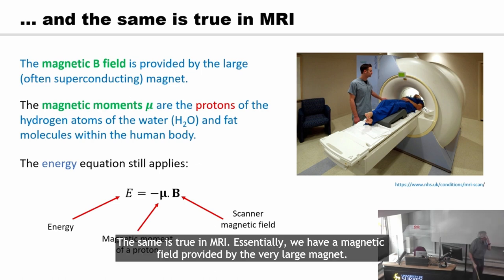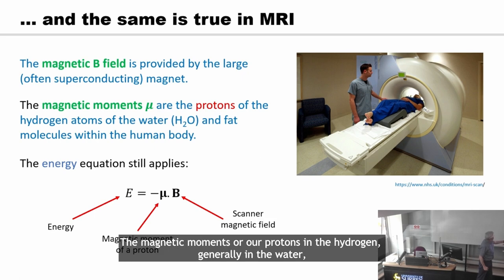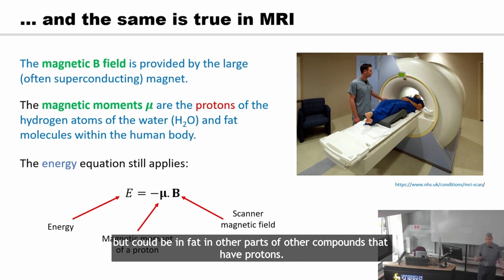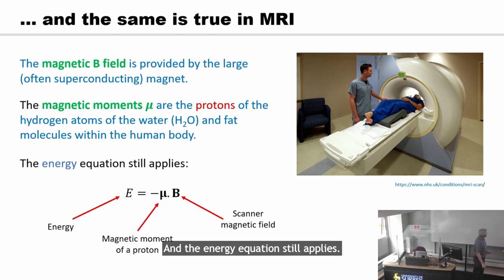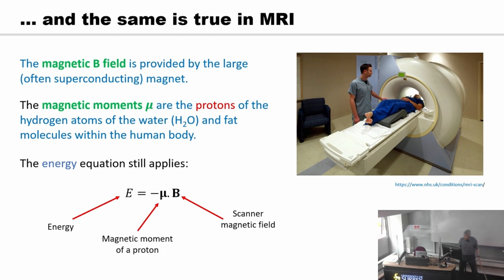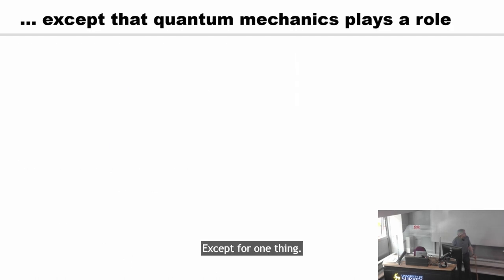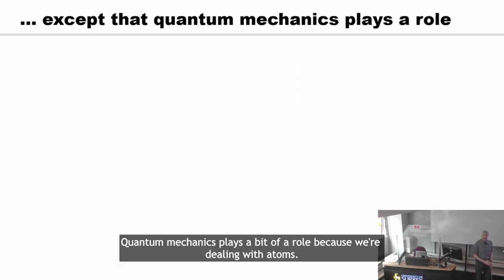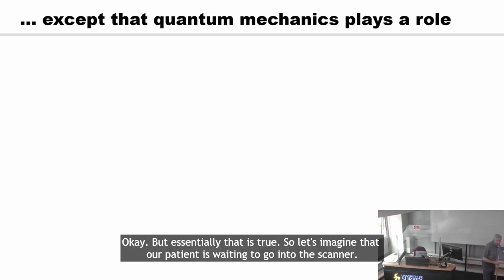The same is true in MRI. We have a magnetic field provided by the very large magnet. The magnetic moments are protons in the hydrogen — generally in the water, but could also be in fat and other compounds that contain protons — and the energy equation still applies. Quantum mechanics plays a bit of a role because we're dealing with atoms, but essentially that is true.